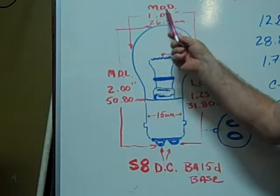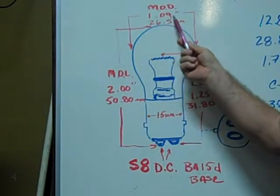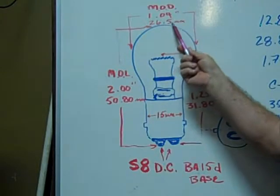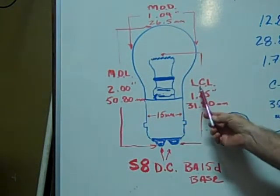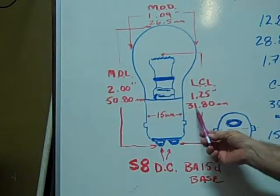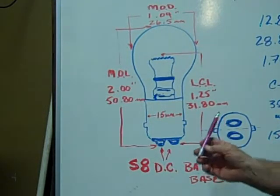The maximum outer diameter is 1.04 inches or 26.5 millimeters. The light centered length is 1.25 inches or 31.80 millimeters.